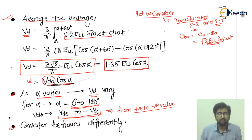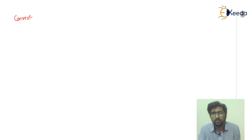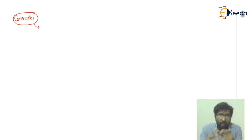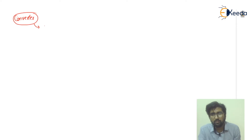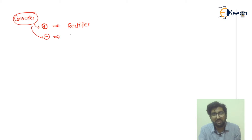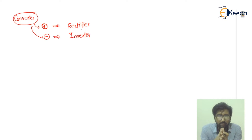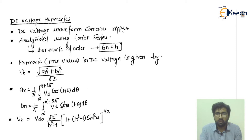The converter will behave differently depending on the value of alpha. If we talk about the converter, it can operate as a rectifier and can also operate as an inverter — this depends entirely on the variation of alpha. If VD is positive, it operates as a rectifier; if VD is negative, it operates as an inverter. So the converter can act as both a rectifier and an inverter.